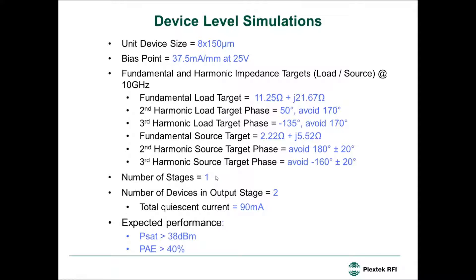We think the target spec can be realized with one stage consisting of two of these unit cells combined. The total quiescent current based on 37.5 milliamp per millimeter density would mean a total quiescent of 90 milliamps for the full amplifier. The expected performance would be saturated output power better than 38 dBm and power added efficiency better than 40%.